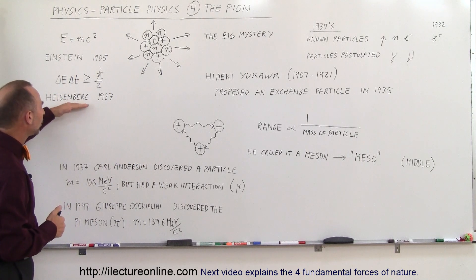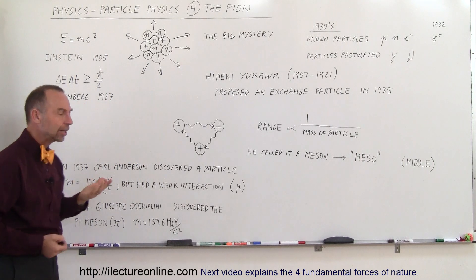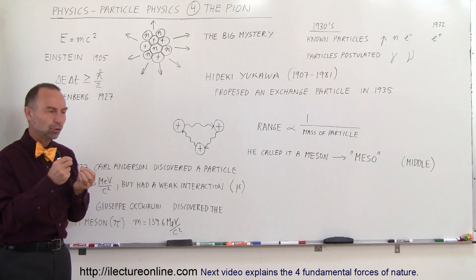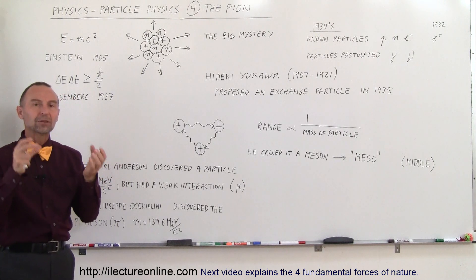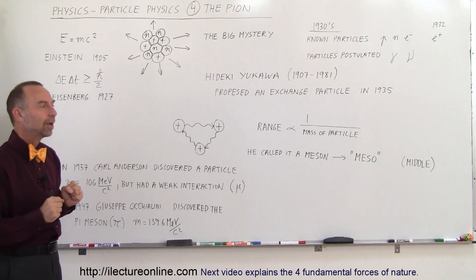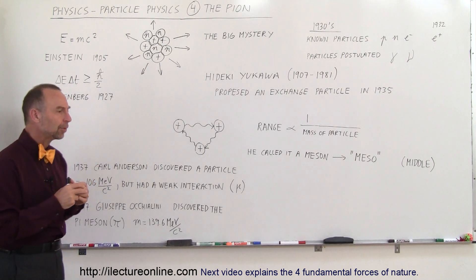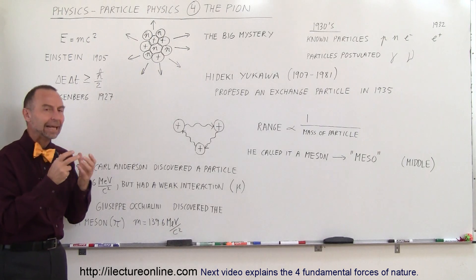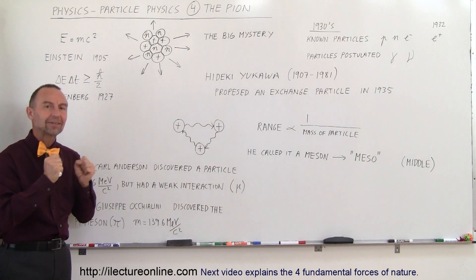Also, in addition to that, Heisenberg in 1927 had postulated the uncertainty principle. He had postulated that it was impossible to determine the position and the momentum of a particle accurately at the same time, and also it was impossible to determine the energy and the time span of that energy accurately at the same time.